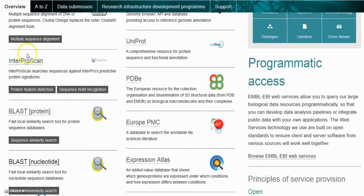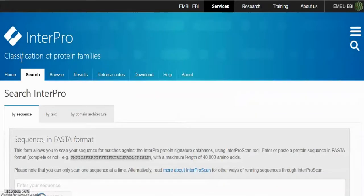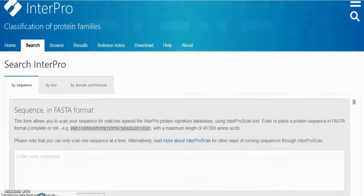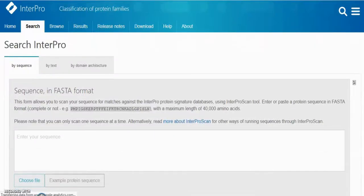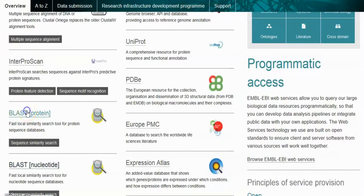InterProScan relies on the classification of protein families. InterPro provides functional analysis of proteins by classifying them into families and predicting domains and important sites. To classify proteins, InterPro uses predictive models known as signatures, provided by several different databases referred to as member databases that make up the InterPro Consortium. Protein signatures from these member databases are combined into a single searchable resource, capitalizing on their individual strengths to produce a powerful integrated database and diagnostic tool.